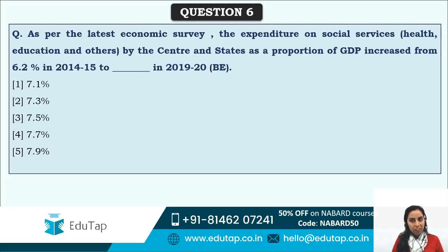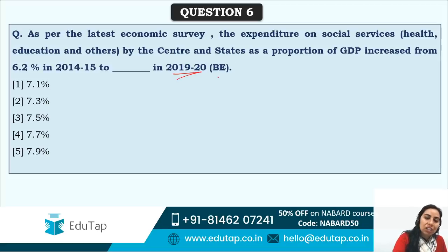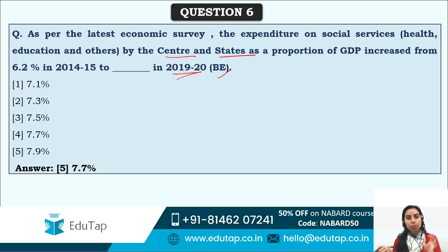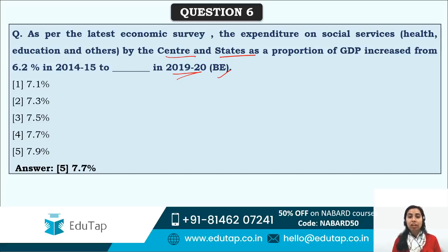Expenditure on social services — health, education, etc. — by the centre and states as a proportion of GDP has increased from 6.2% in 2014–15 to 7.7% in 2019–20. The Economic Survey notes this increase is significant because literacy, education, and health are required for fostering entrepreneurship and a healthy capital market.